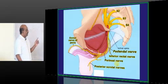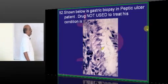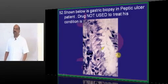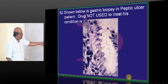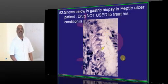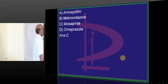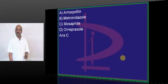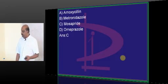Now a gastric biopsy is being done in a peptic ulcer patient. You are able to see comma-shaped organisms, which are Helicobacter pylori. What are all the drugs used in Helicobacter pylori? The triple regimen uses amoxicillin, metronidazole, and omeprazole.